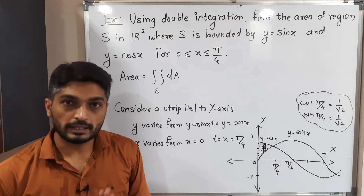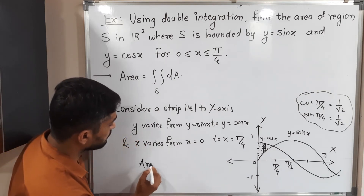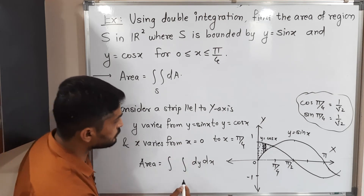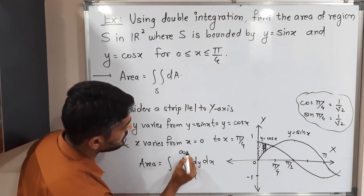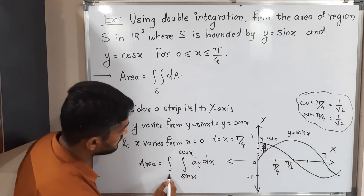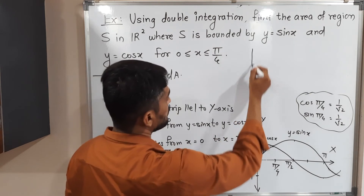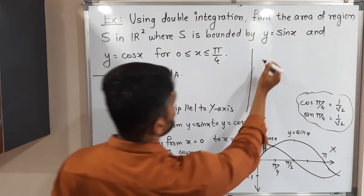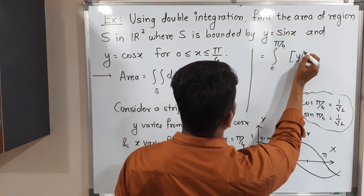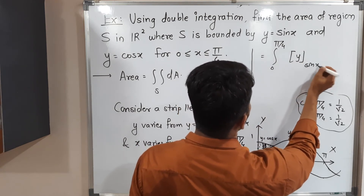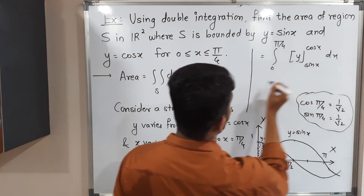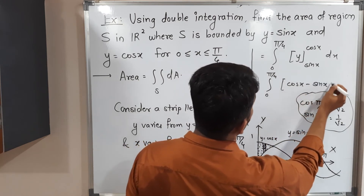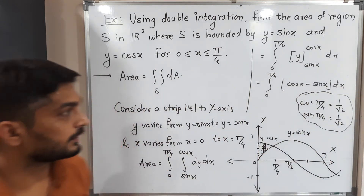Now we have the limits, so area is equal to the double integration written as dy dx, since our strip is parallel to the y-axis. The limits of y are from sin x to cos x, and the limits of x are from 0 to π/4. Performing the inner integration with respect to y: the integral of dy is y. So we get integration from 0 to π/4 of [y] evaluated from sin x to cos x, dx, giving (cos x − sin x) dx.